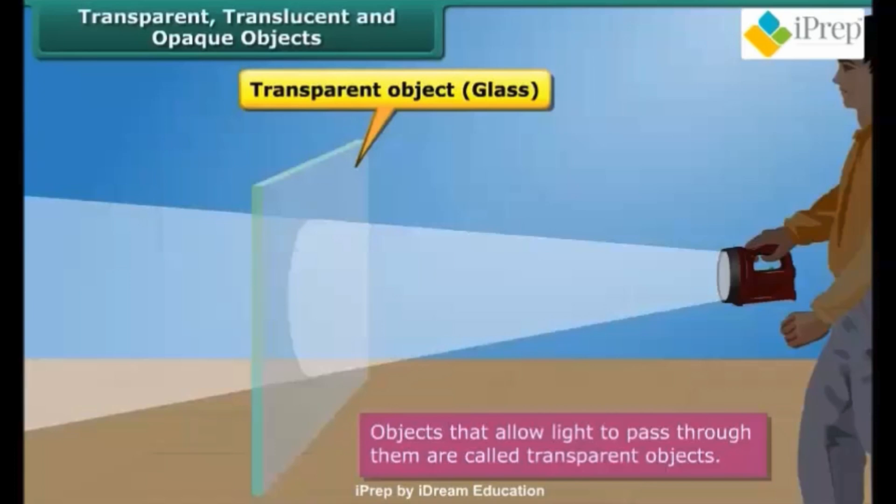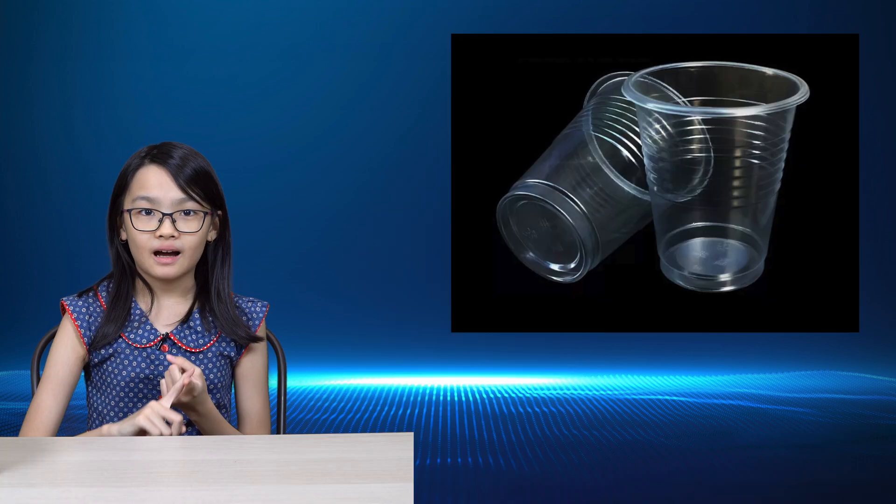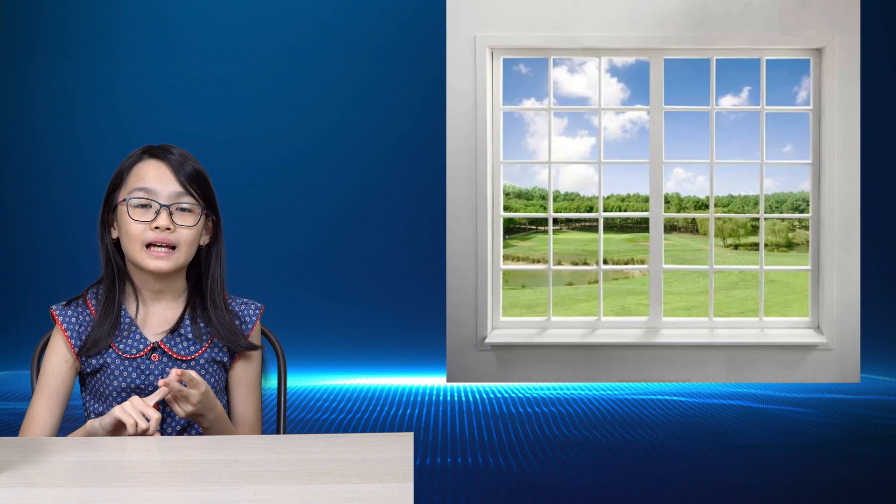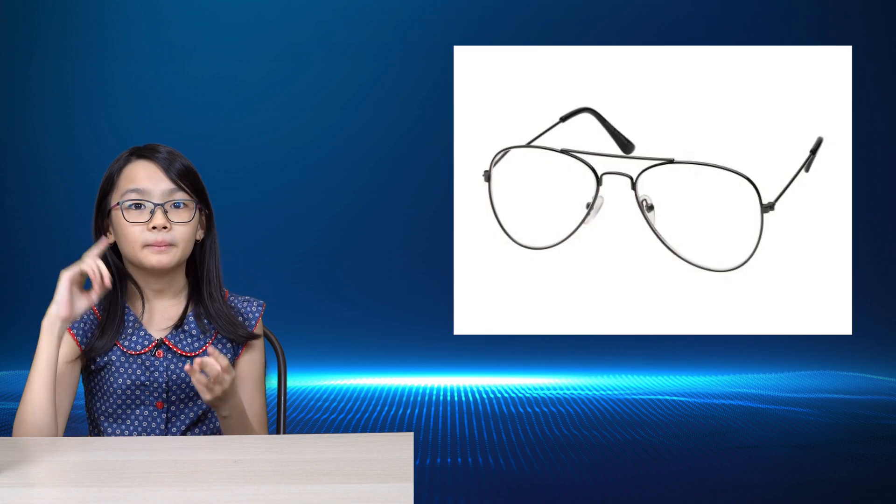Next, transparent objects. What is a transparent object? Transparent objects are objects that allow most light to pass through. Here are some examples of transparent objects: plastic cup, glass, glass window, glasses, and many more.